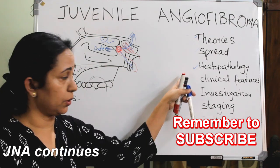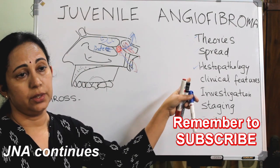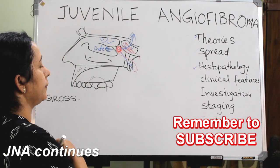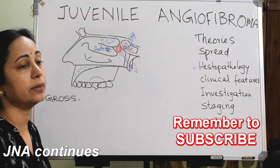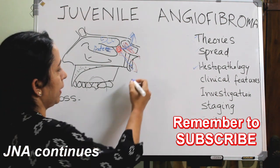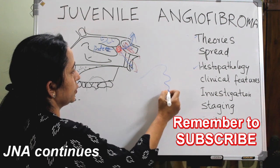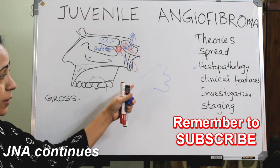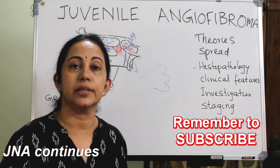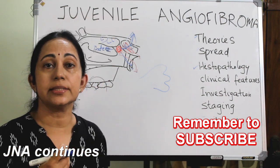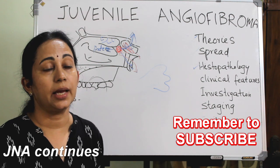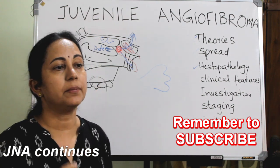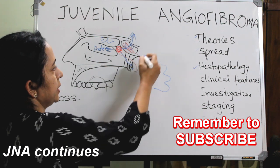The next is histopathology. Grossly, JNA presents as a well-defined lobulated mass covered with nasopharyngeal mucosa. The color is red to grayish, and it has a spongy appearance. The mean size is usually 4 cm.